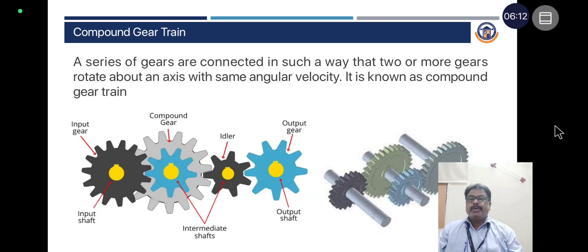Compound gear train: A series of gears are connected in such a way that two or more gears rotate about an axis with the same angular velocity. This is known as a compound gear train. Compound gear trains are used to make compact gearbox sizes.